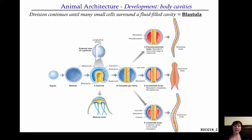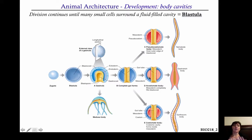At that point, three different things can happen. I'm going to show you on the next slide how you get these red cells — these are your mesoderm, the middle layer. You're talking about animals that are triploblastic, and they have three cell layers: ectoderm, endoderm, and mesoderm.